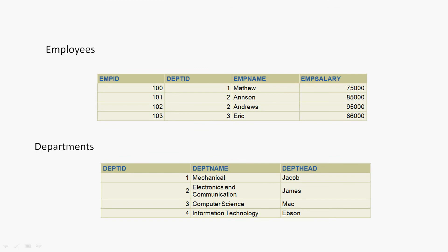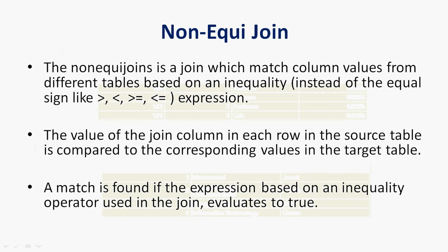That is all about equi join. Now we will go to non-equi join. Here we do not use the equal symbol. Non-equi join is a join which matches column values from different tables based on an inequality. Instead of the equal sign we can use greater than, less than, greater than or equals, less than or equals. The value of the join column in each row is compared to the corresponding values in the target table, and a match is found if the inequality expression evaluates to true.